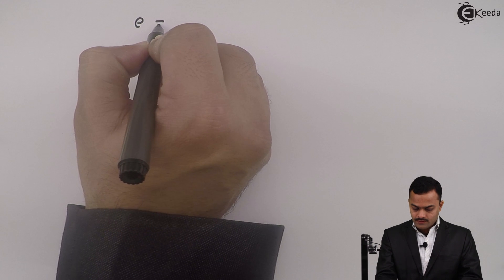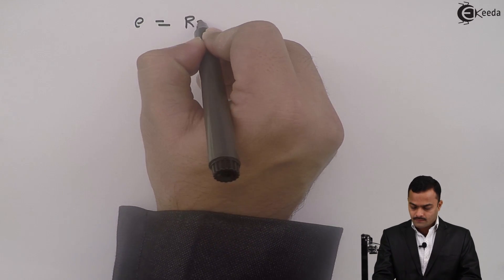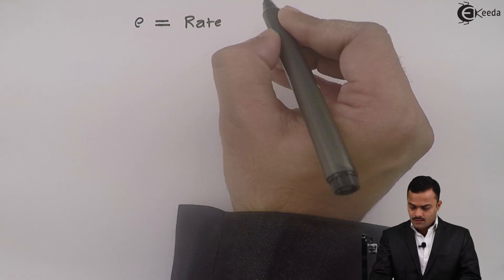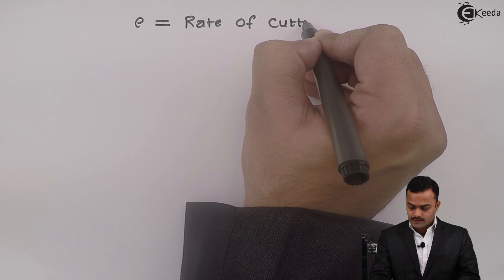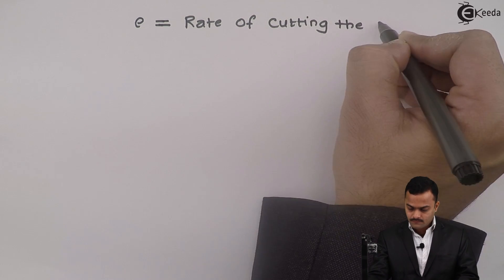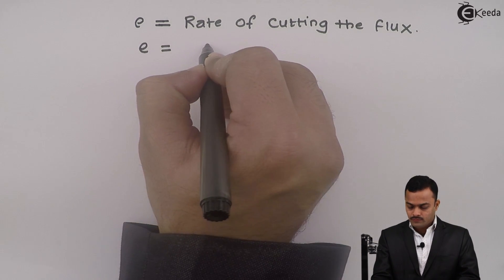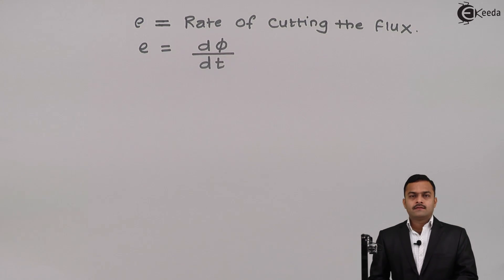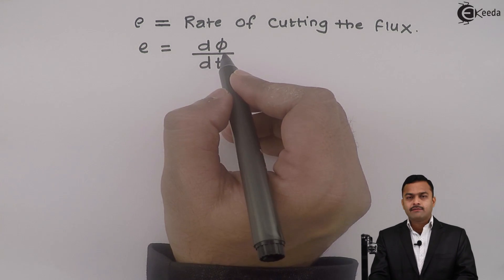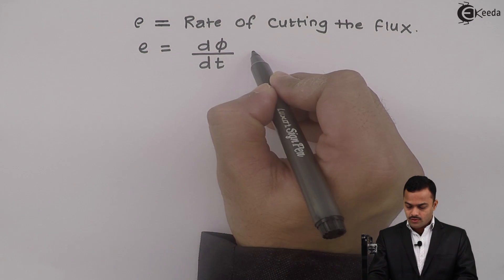Now, EMF induced in armature conductor is given by Faraday's law of electromagnetic induction, which states that EMF induced E is nothing but rate of cutting the flux. What does that mean? EMF E equal to dΦ by dt. Now, let's derive EMF equation taking E equal to dΦ by dt. This is as per Faraday's law of electromagnetic induction.